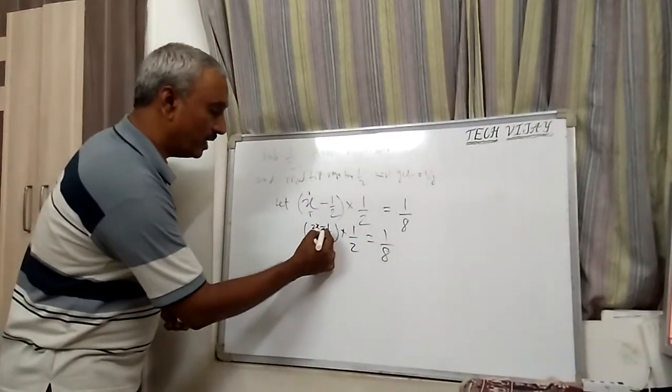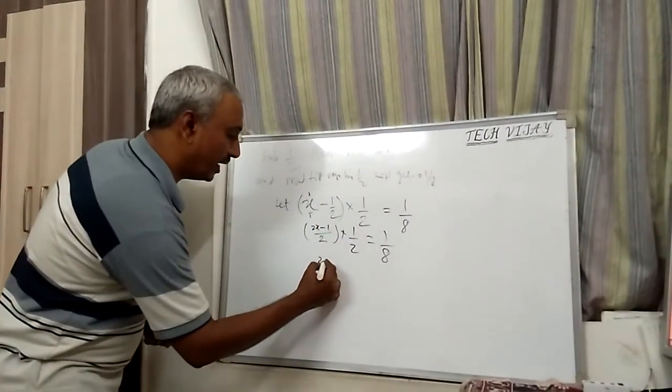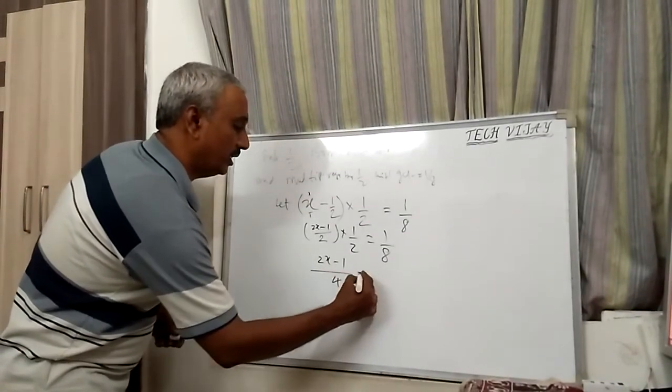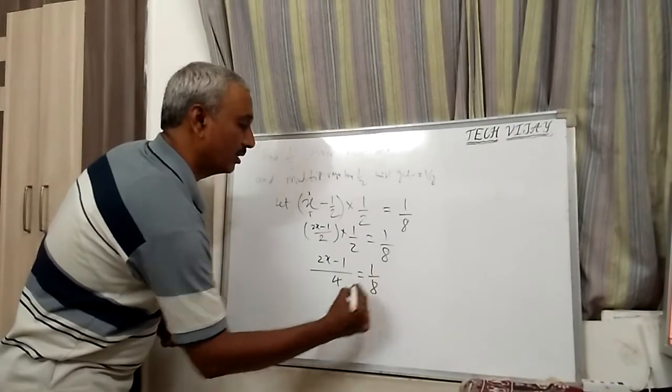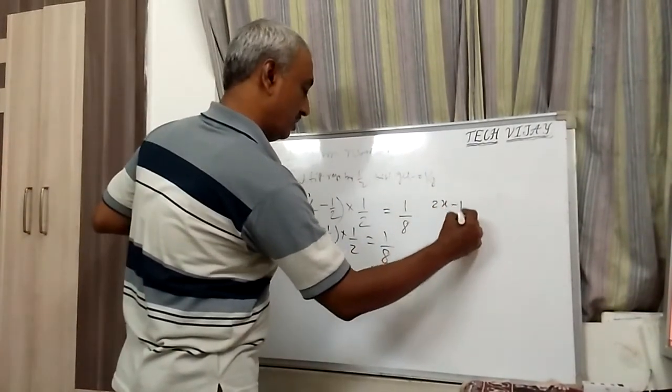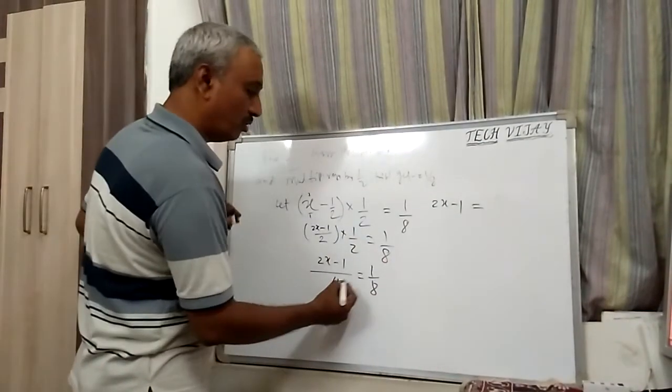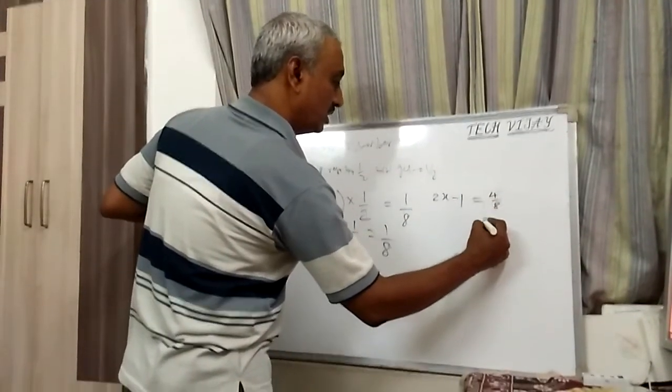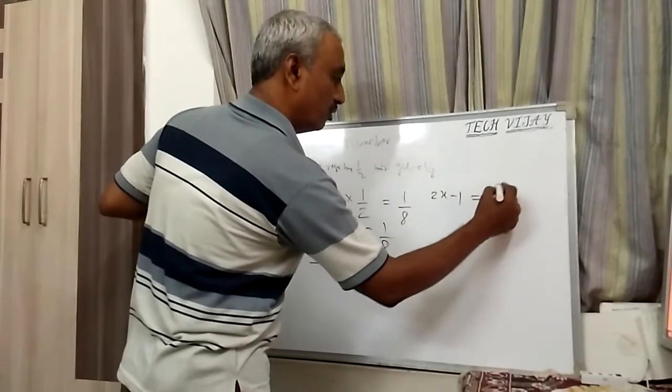Here 2x minus 1 into 1 will be 2x minus 1. 2 into 2 will be 4. It is equal to 1/8. So here 2x minus 1, the 4 goes here, so 4/8. This is equal to 1/2. This is 4 into 1 and 4 into 2.